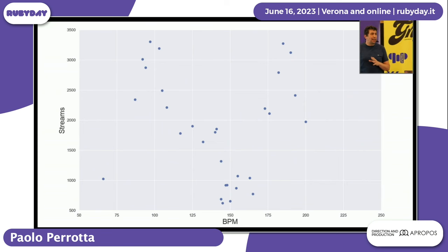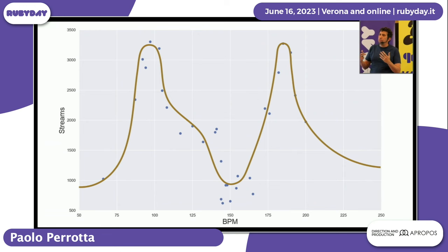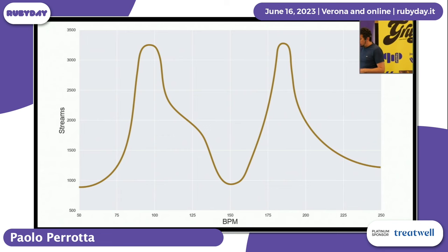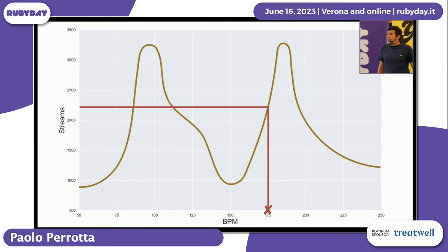It gets better if we take these points and approximate them with a continuous function. Once we have this, we can forget about the data and just use the function. So if our latest track has 175 BPM, the function will tell us how we can expect it to do.